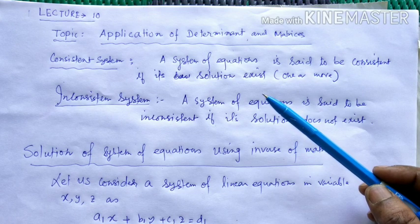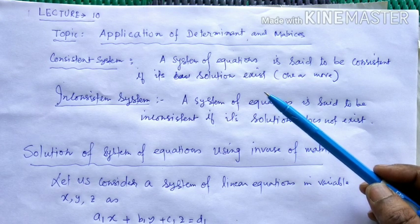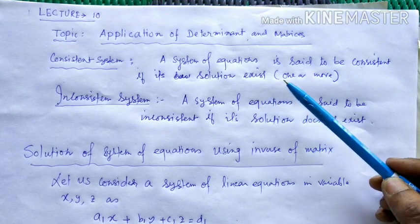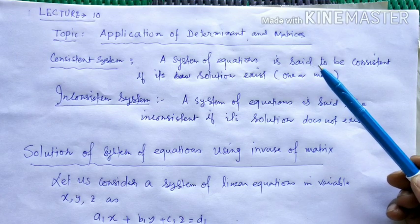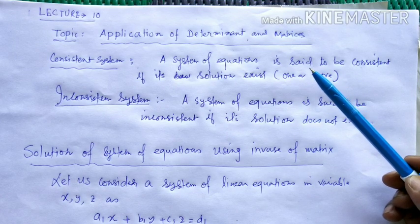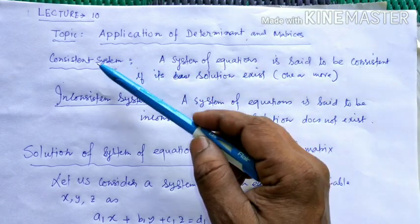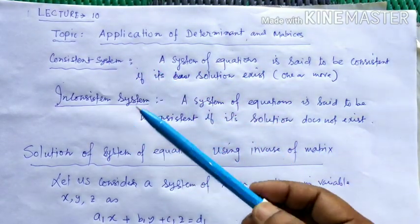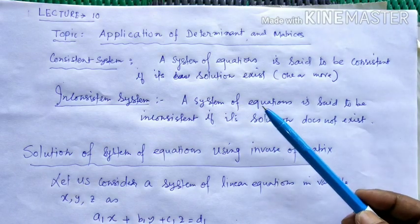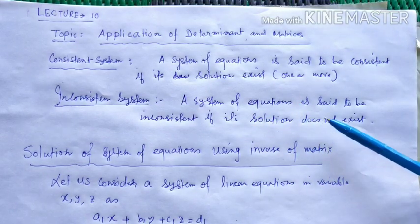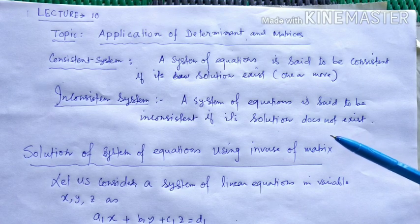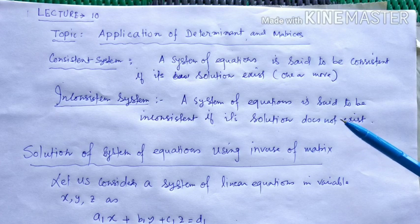Sometimes a system of equations can have more than one solution — it may have an infinite number of solutions. If one solution or more solutions exist, the system of equations is called consistent. If the system of equations has no solution, then it is automatically called inconsistent — that means the solution does not exist.